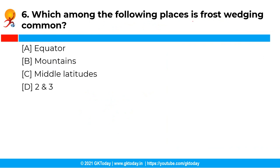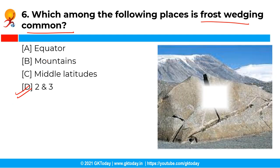The next question is: which among the following places is frost wedging common? The correct answer is option D, that is options 2 and 3 are correct.